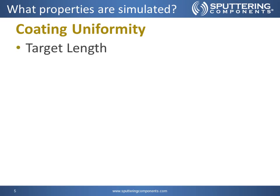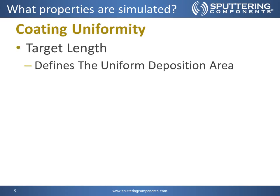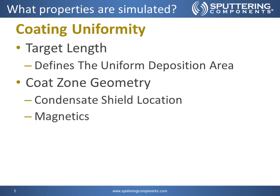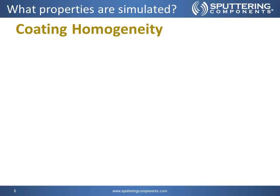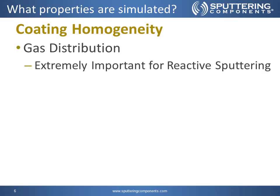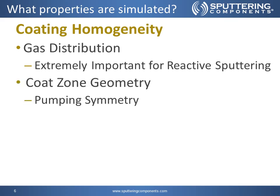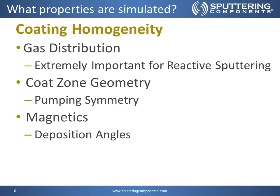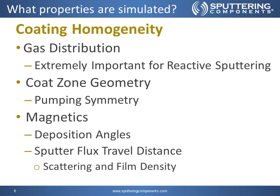For coating uniformity, we're going to look at the target length which defines the uniform deposition area, the code zone geometry which includes the condensate shield locations, and magnetics which defines our deposition angles. For coating homogeneity, we'll look at the gas distribution which is extremely important for reactive sputtering, since the local partial pressure of the reactive gas will determine the product that is created. The code zone geometry, looking at the pumping symmetry, magnetics for the deposition angle, and the sputter flux travel distance to determine the scattering and film density.